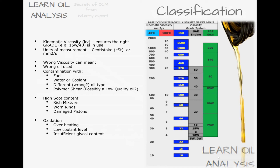Whilst for multigrades, everything after the W is also measured at 100 degrees C. The bit before the W requires specialist instruments such as a cold cranking simulator, not used routinely during oil analysis and beyond the scope of this presentation. A SAE40, a 15W40, or a 10W40 — i.e. all those ending in 40 when measured at 100 degrees C — need to be between 12.5 and 16.3, whilst everything ending in 30 needs to be between 9.3 and 12.5.